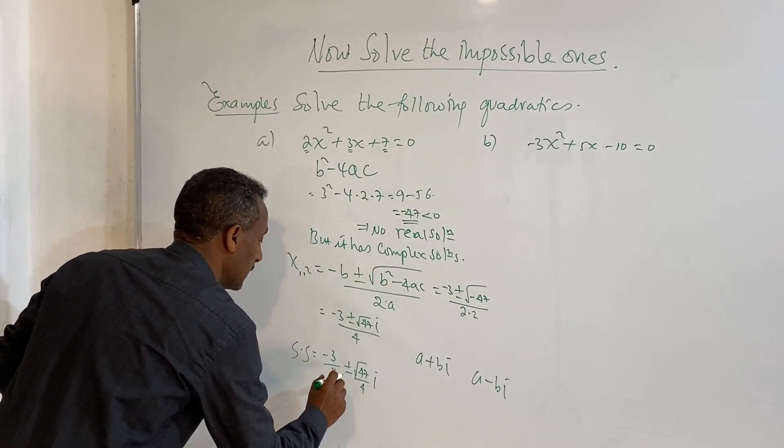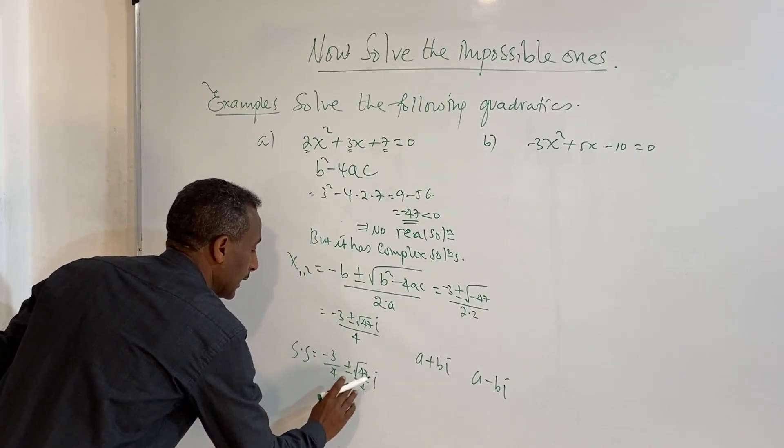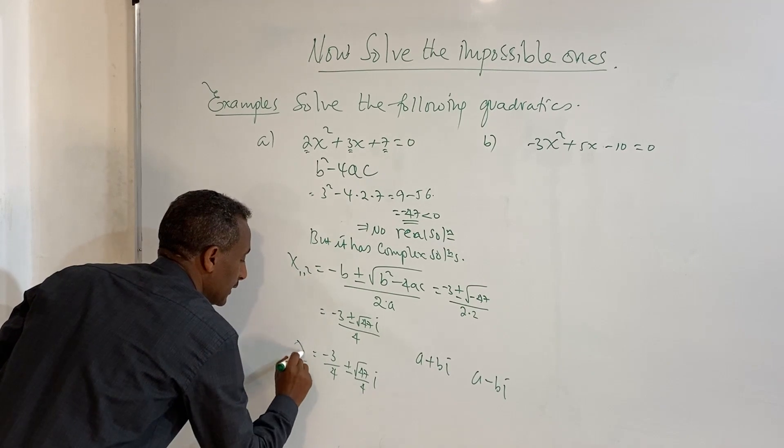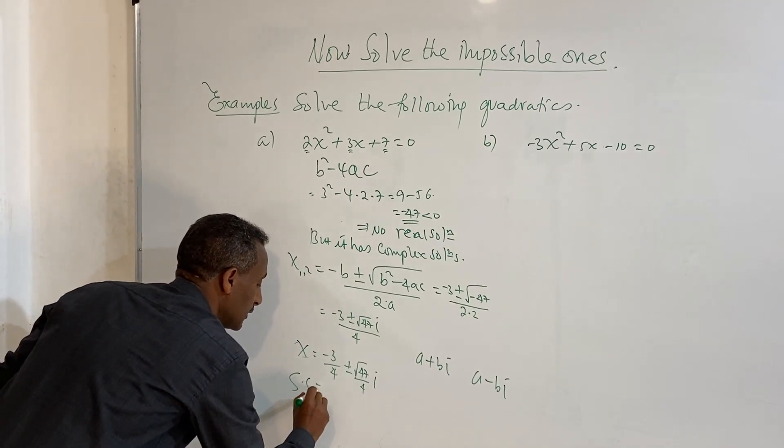For complex numbers, if one complex number is a solution, its conjugate is also the solution.